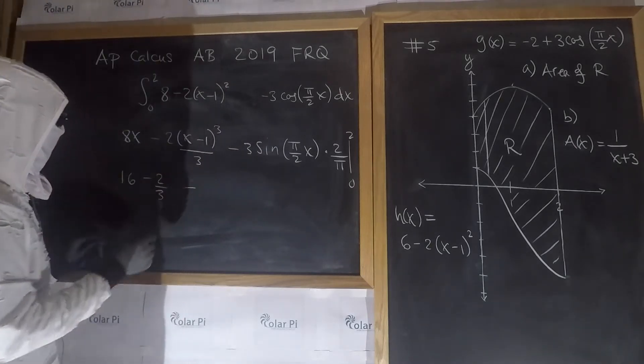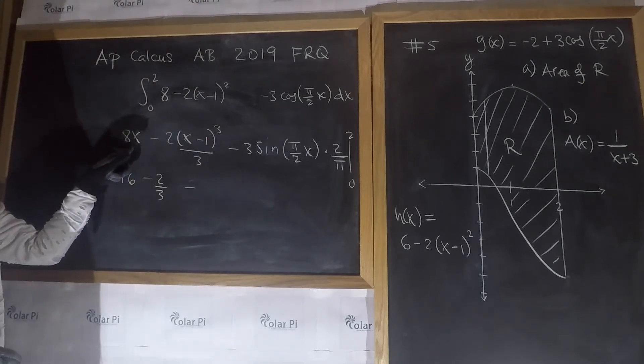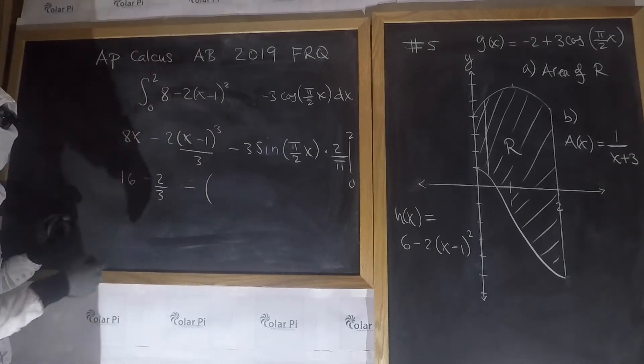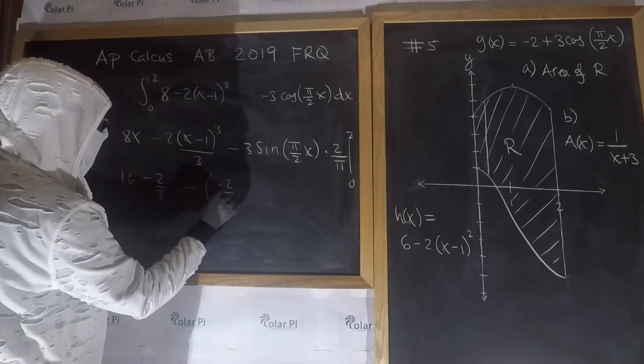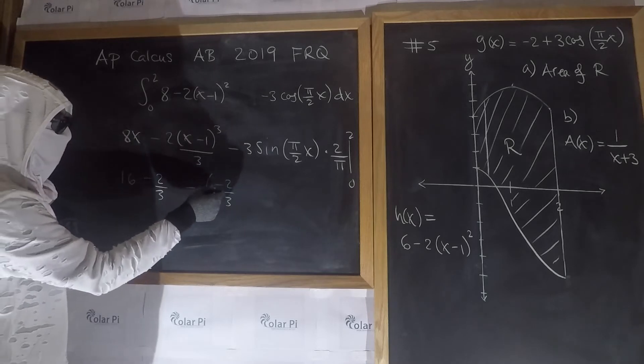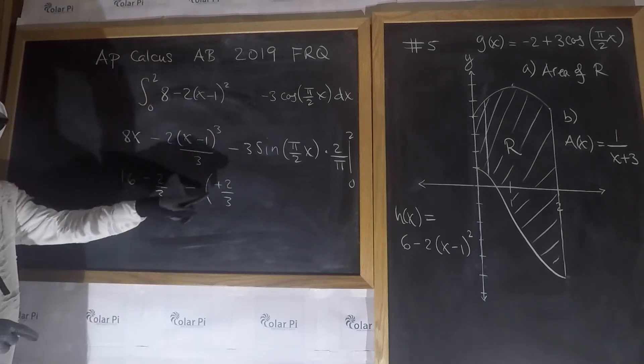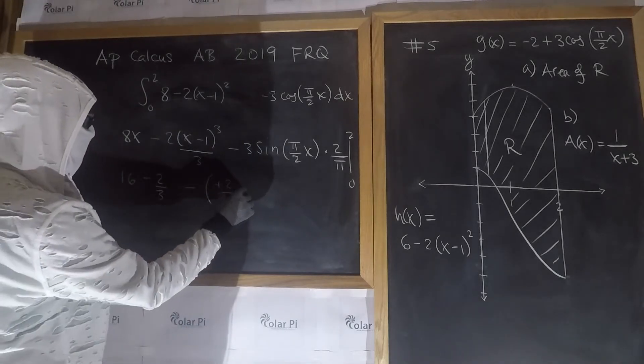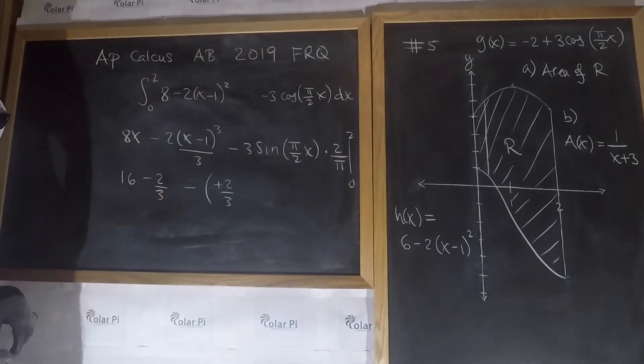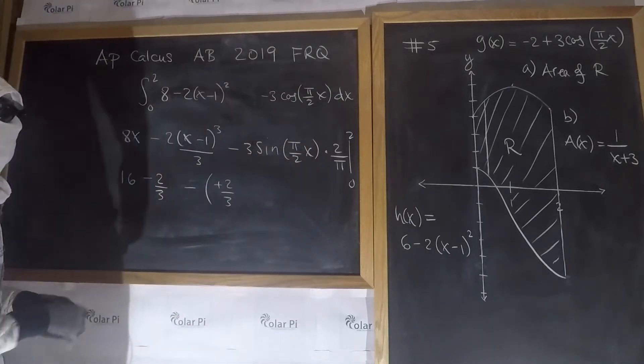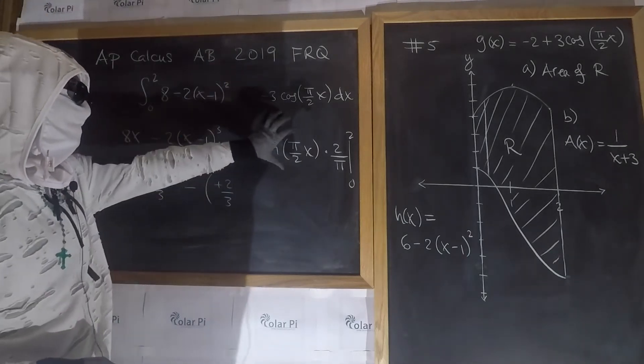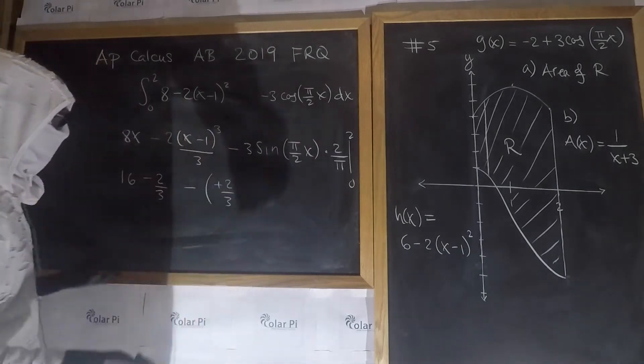And then now we plug in 0. When I plug in 0, that's 0, and then when I plug in 0 in here, this minus is from the evaluation theorem, so I have minus 2 over 3. Plug in 0 here gets us negative 1 cubed, which is negative 1, so that turns this into a plus. And then when I plug in 0 here, I get minus 3 times sine of 0, and sine of 0 is 0. Since sine of 0 is 0, this whole thing is annihilated.